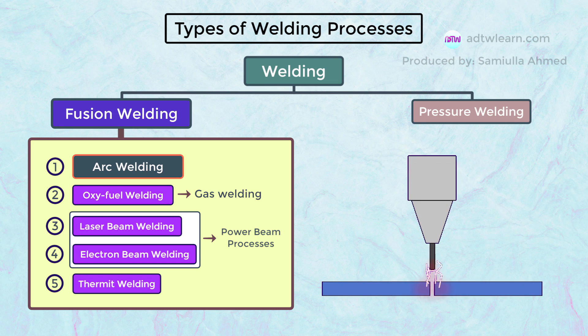Arc welding is greatly used and is further classified into different types. The main fundamental concept in arc welding is that an electric arc is produced, which creates sufficient heat to melt the metal so that it can fuse.